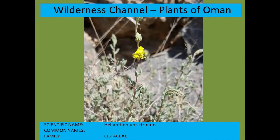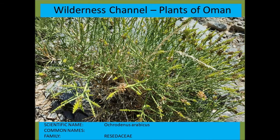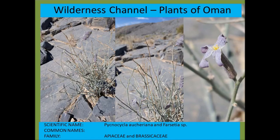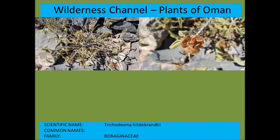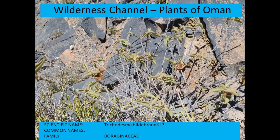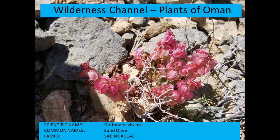Helianthemum citrinum from the Cistaceae — mentioned before. Pycnocycla or Ceriana. Farsetia — here's the Farsetia again. Trichodesma hildebrandtii another view, and those might be fruits of Dodonaea viscosa — the sand olive.